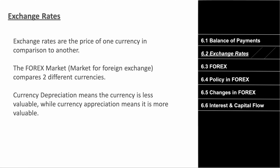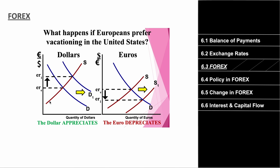The foreign exchange market — typically called forex — compares two different currencies. Currency depreciation means a currency becomes less valuable, while currency appreciation means it becomes more valuable. We have graphs for this: one graph shows quantity of dollars on the x-axis and euros on the y-axis, and the other shows the reverse, illustrating the supply and demand of both dollars and euros.